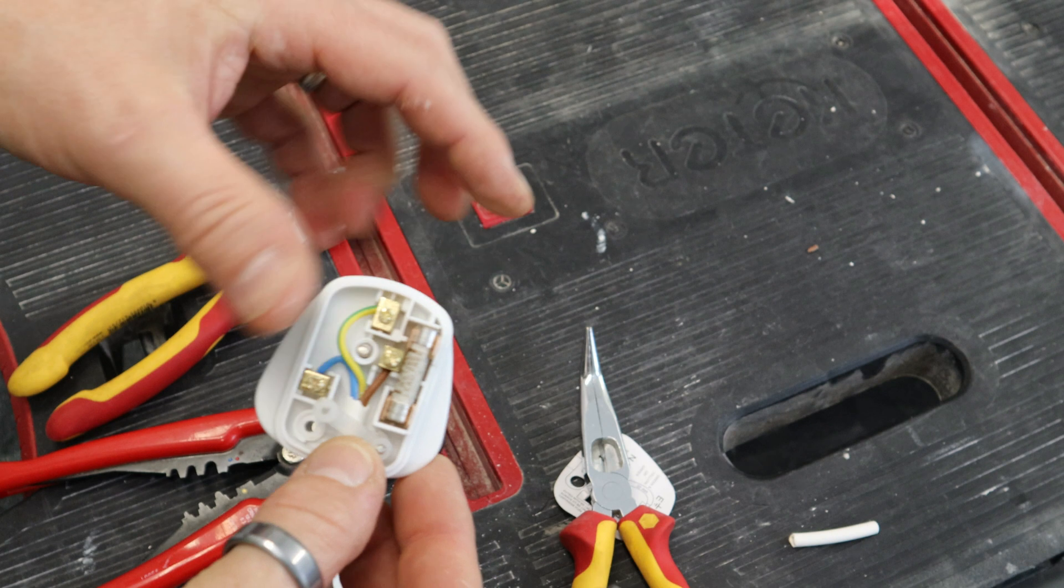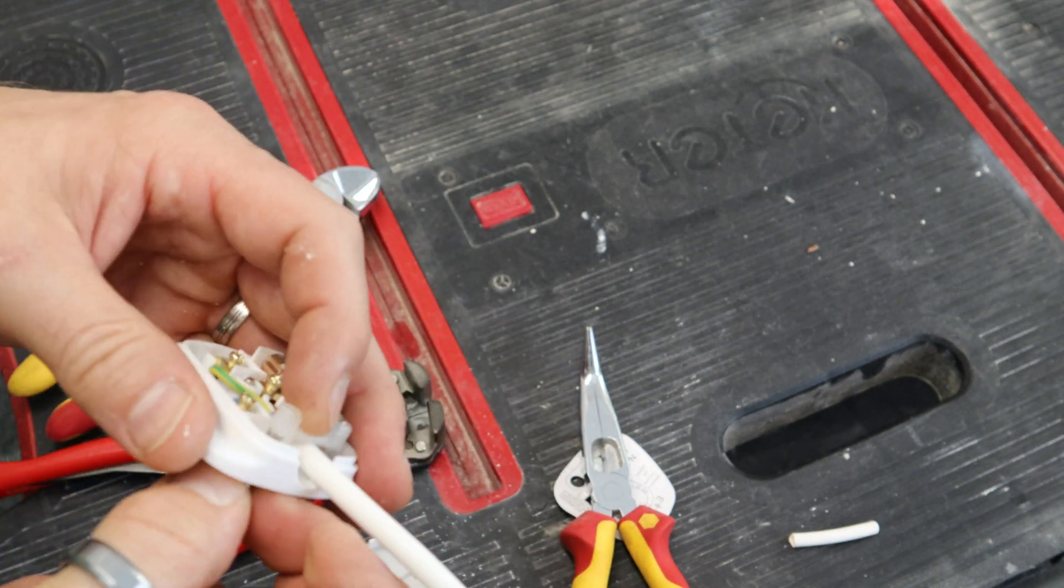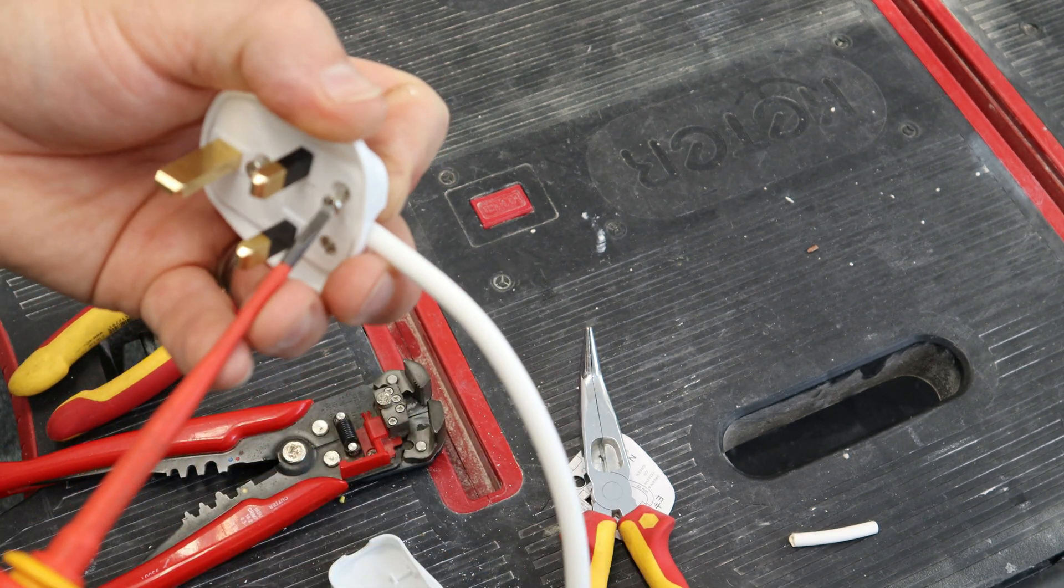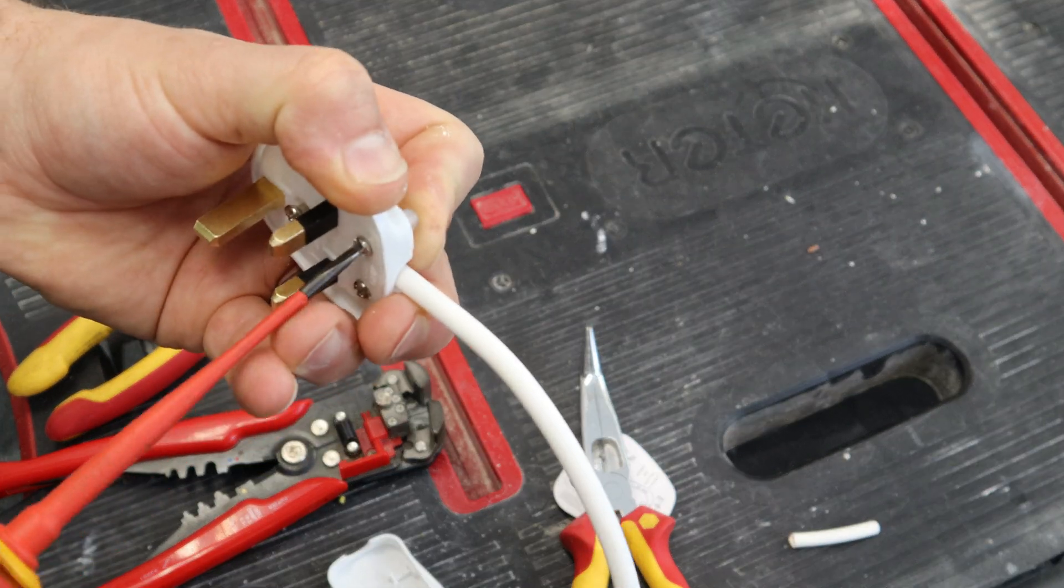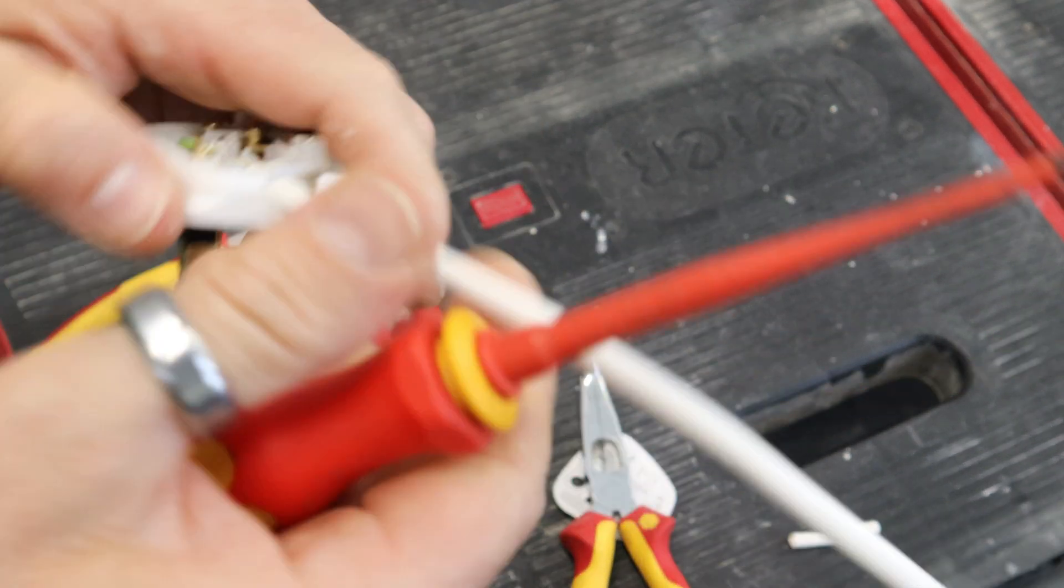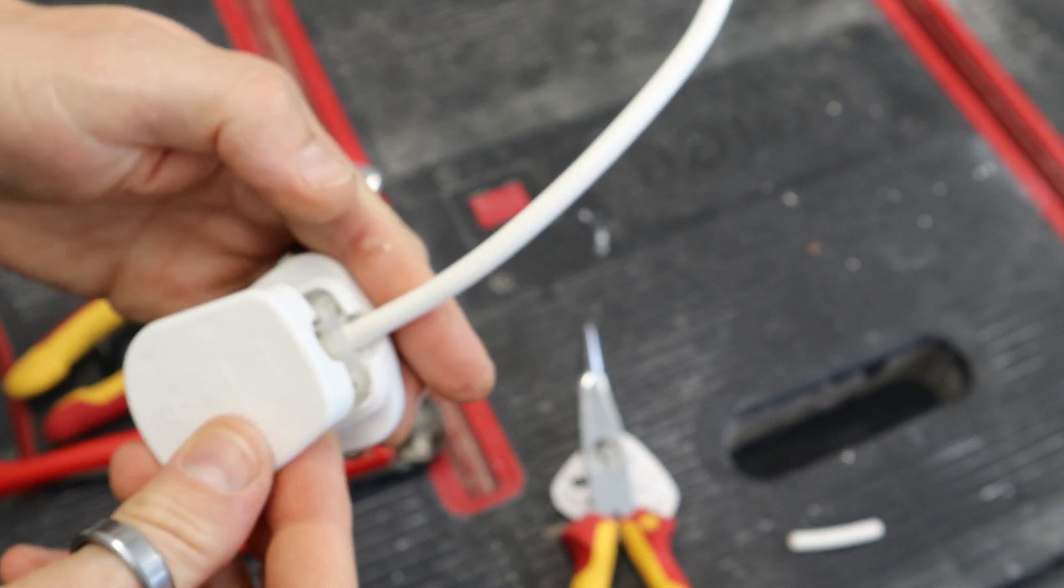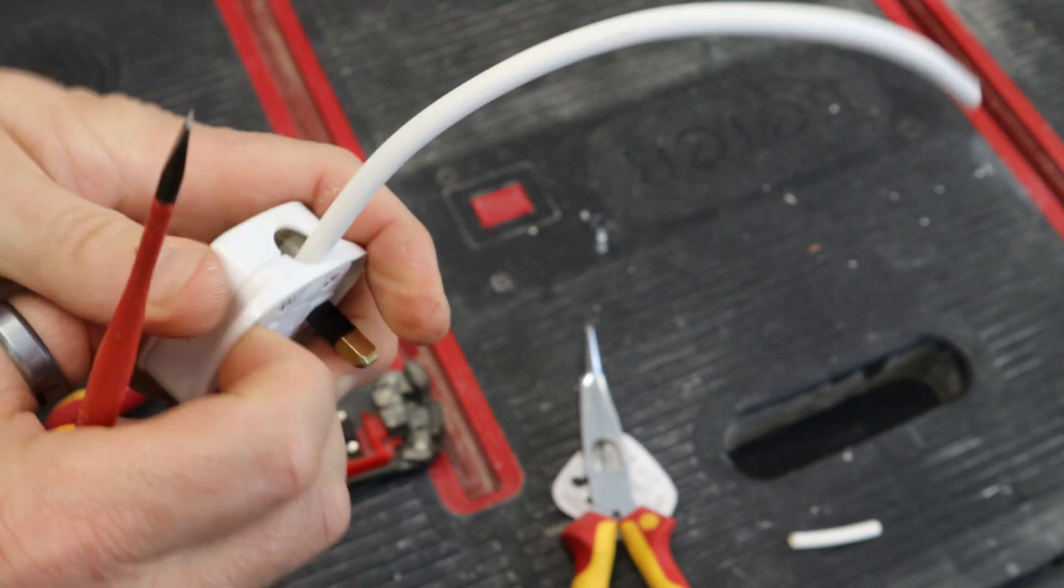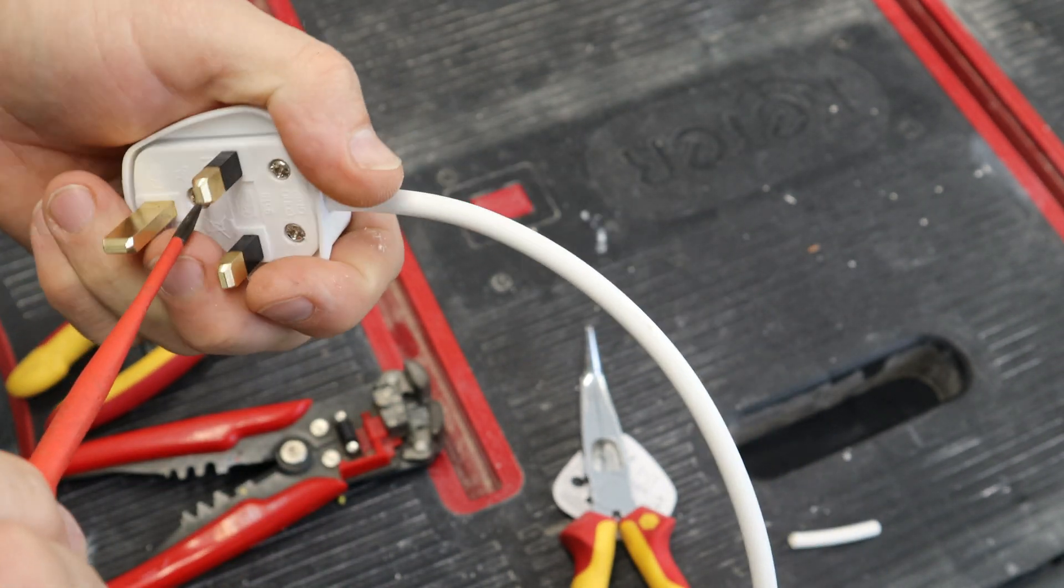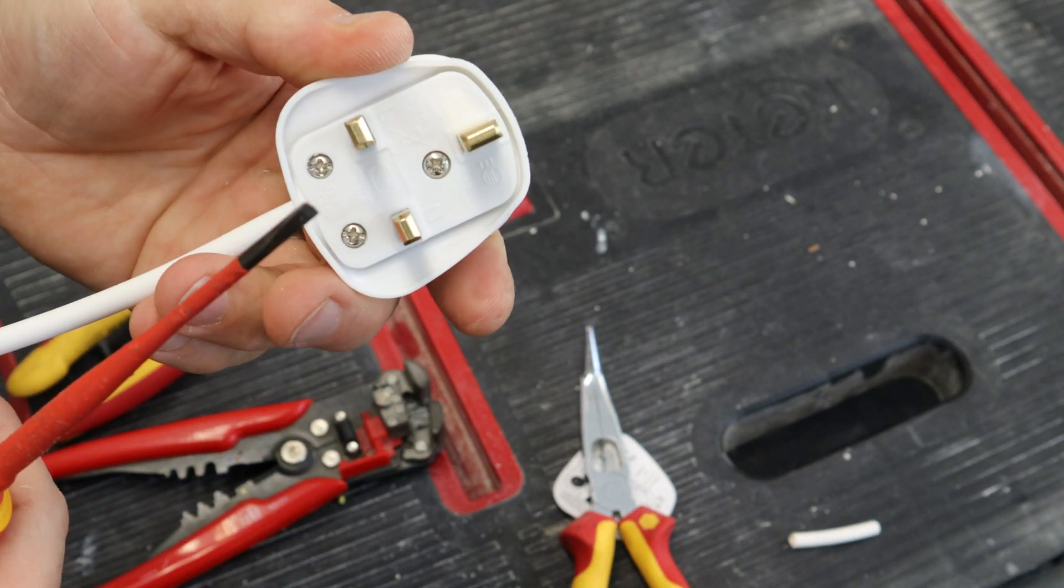Once the cable's in, just put your clamp back on, put the screw back in, tighten up the clamp. Again, you want it tight enough to hold the cable, but not too tight that you end up crushing it. So just like that. Put the back cover on, make sure it's done up, and you're ready to plug it in.